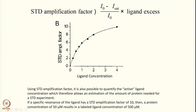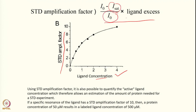Now, can we find out the KD of the binding? Yes, we can. We increase the ligand concentration and then measure the STD amplification factor — how many times we can get more STD signal. Using the ligand concentration and STD amplification factor, we can find out the KD. The STD amplification factor is: (I0 minus I-sat) divided by I0, multiplied by the ligand excess. Fitting this curve gives us the dissociation constant KD.